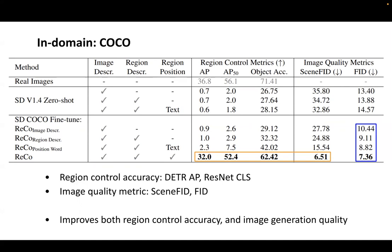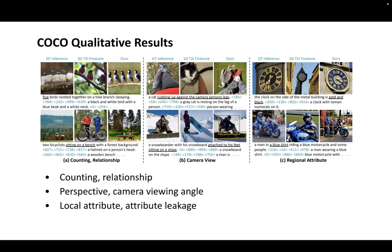Interestingly, RECO further improves the overall image generation quality. On one hand, the extra region description eases image generation learning and improves global image quality, evidenced by the RECO region description baseline. On the other hand, RECO's region control also improves semantic correctness and therefore improves FID in that way. For example, from left to right, we show the semantic correctness in generating the correct number of objects and relationships, generating images with challenging perspectives and camera view angles, as well as enforcing correct regional attributes such as a gold and black clock.